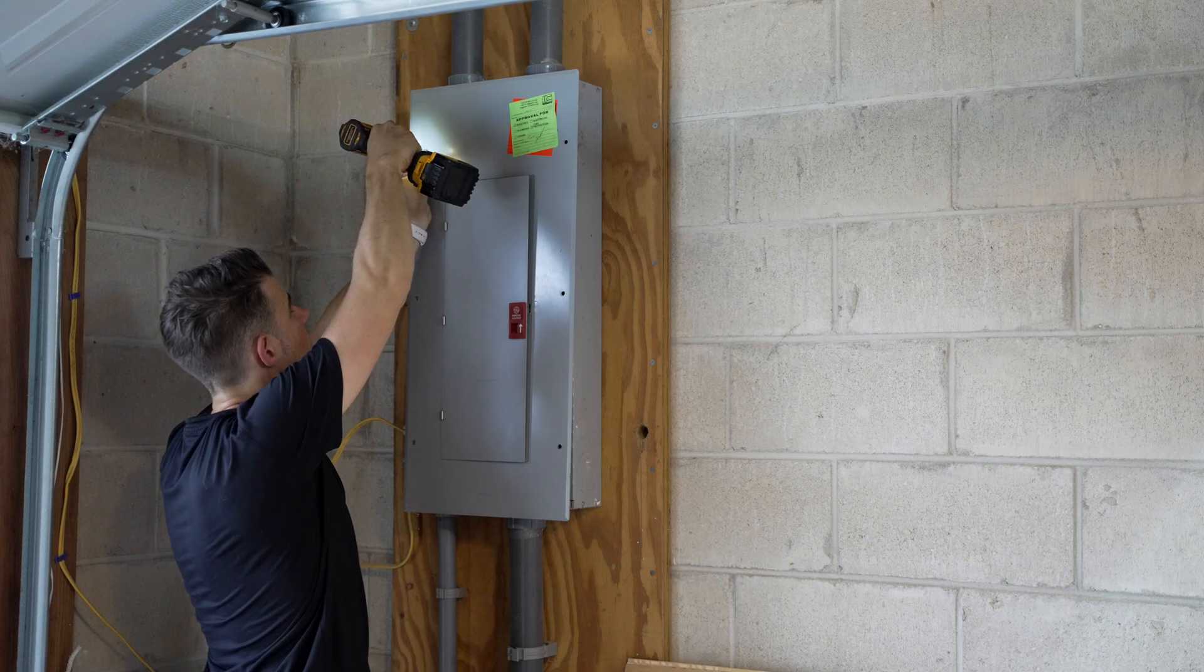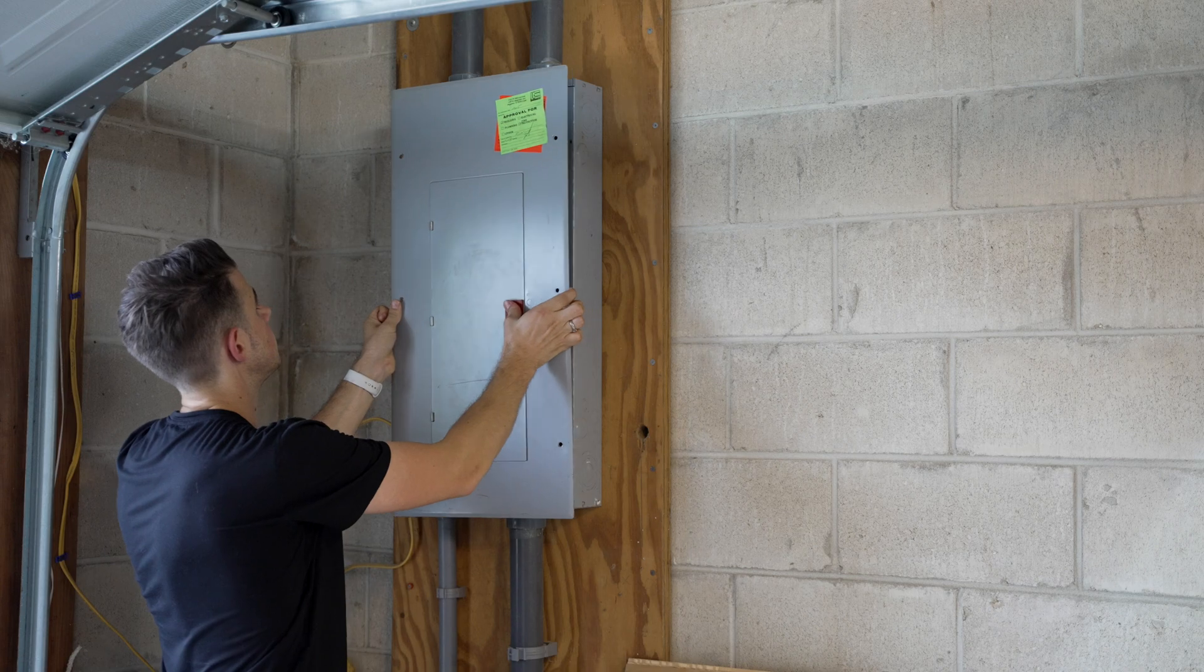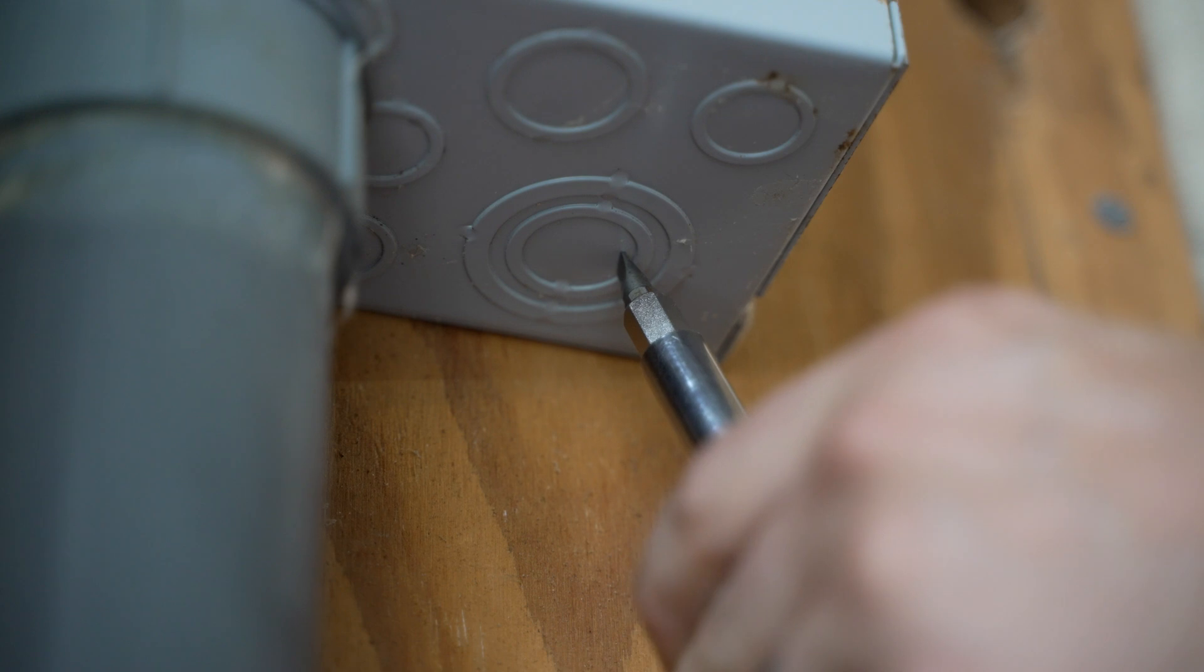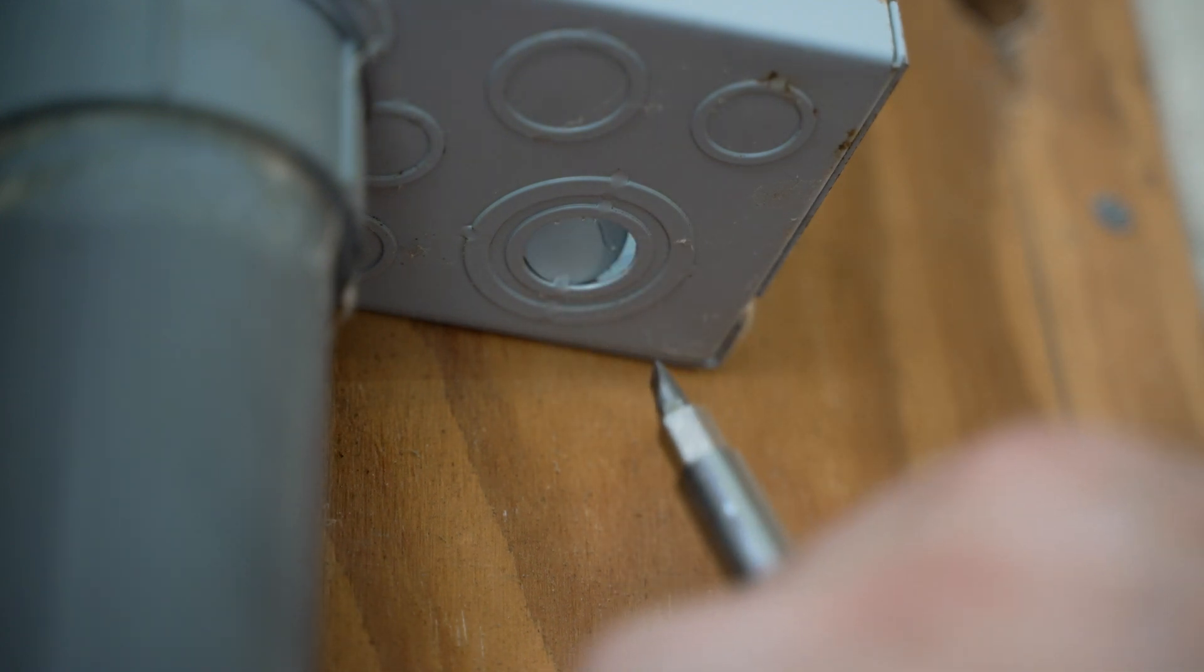The first step is to take apart the electric panel. Obviously if you can, try to turn off the power to the panel. Then we have to knock out this knockout at the bottom to run our three-quarter inch conduit connector into the panel.